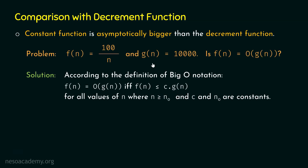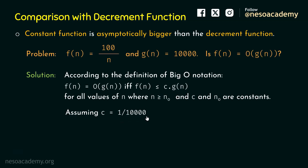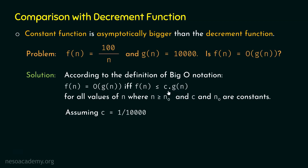Let's try to prove this. To make g(n) as small as possible, we will multiply g(n) by c equal to 1/10,000. We know that c must be multiplied to g(n), and c we are assuming is 1/10,000. Then c · g(n) becomes 1. Now we will try to prove that f(n) is less than or equal to c · g(n) for all values of n greater than or equal to n0. We know c · g(n) is 1 and f(n) is 100/n. So can we say that 100/n is less than or equal to 1?